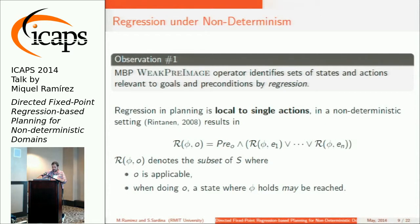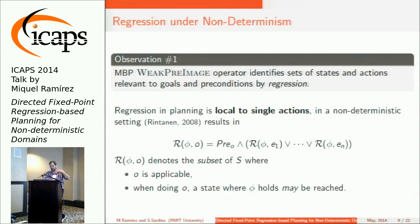In our paper, we borrow the notation and part of the results that Joseph Rintanen discusses in his IJCAI 2010 paper, and we end up with a definition of regression operation for non-determinism which is weaker than Rintanen's definition. The result of regression is a DNF formula where each clause denotes a subset of states where an action is applicable, and when doing that action, states where the condition phi holds may be reached.